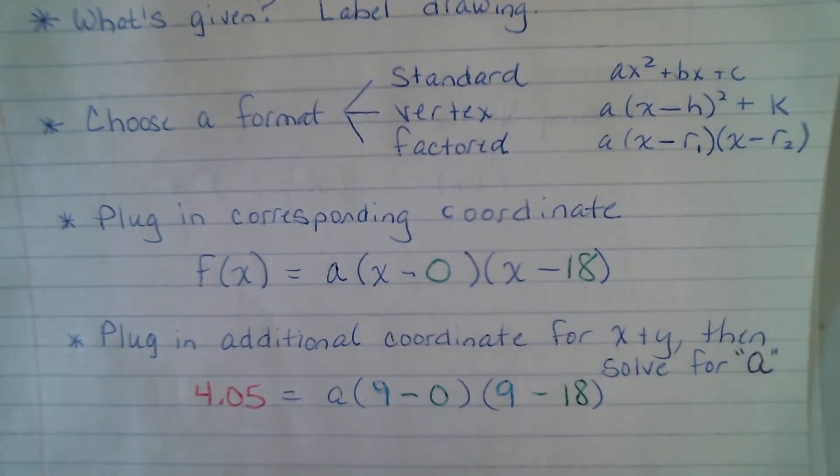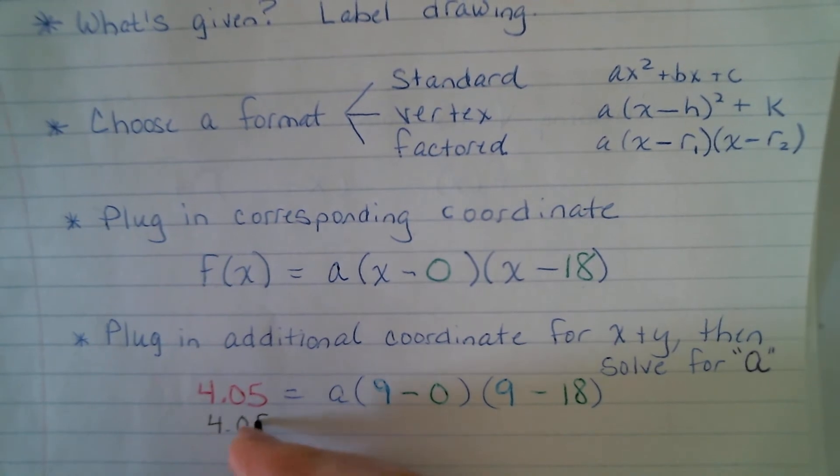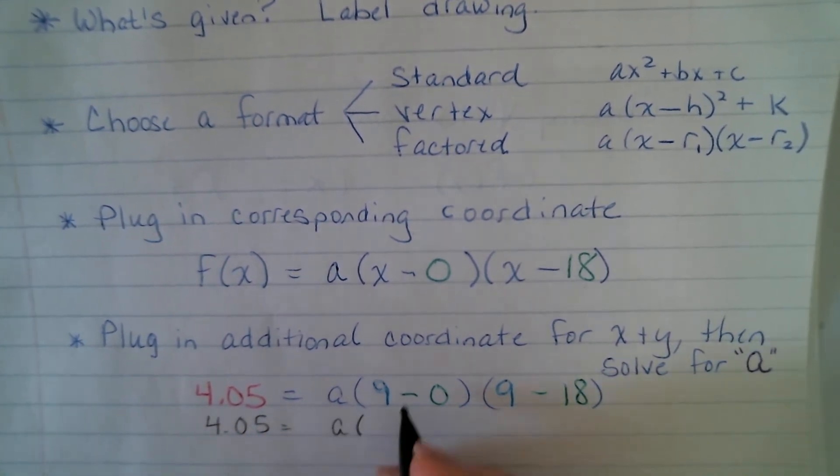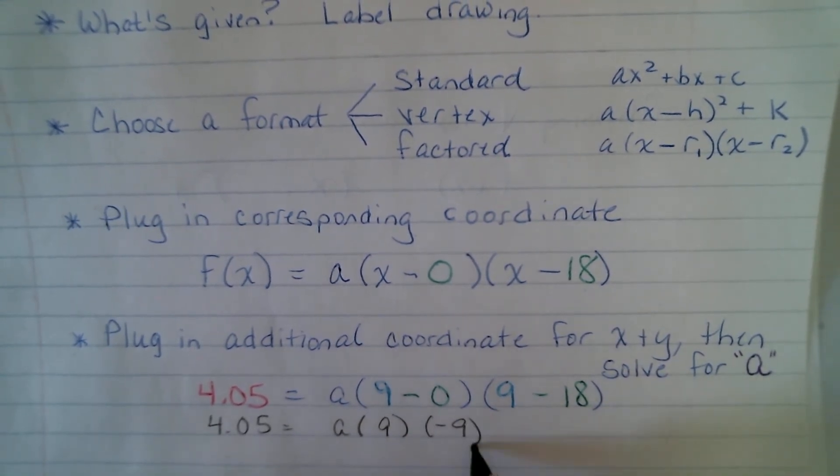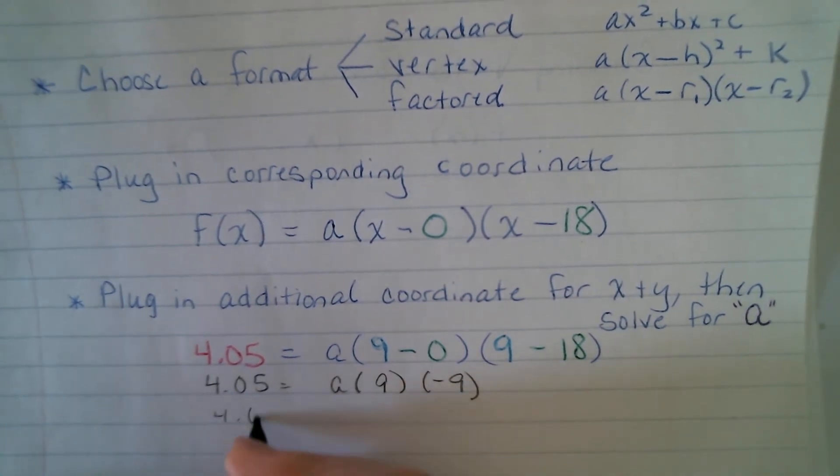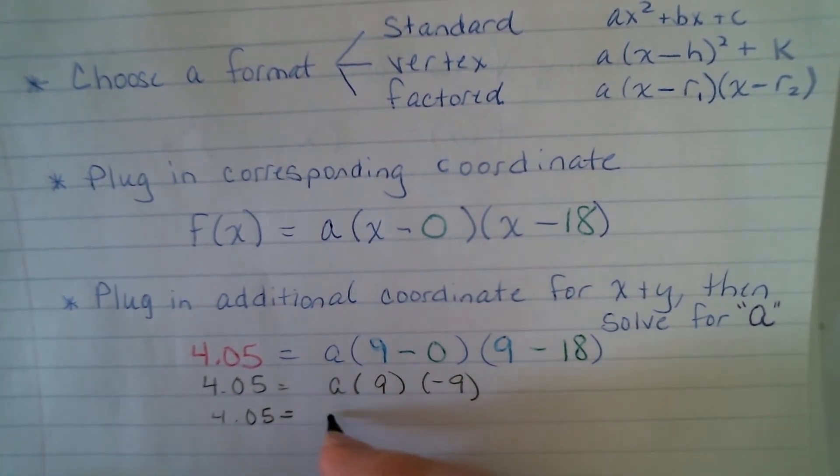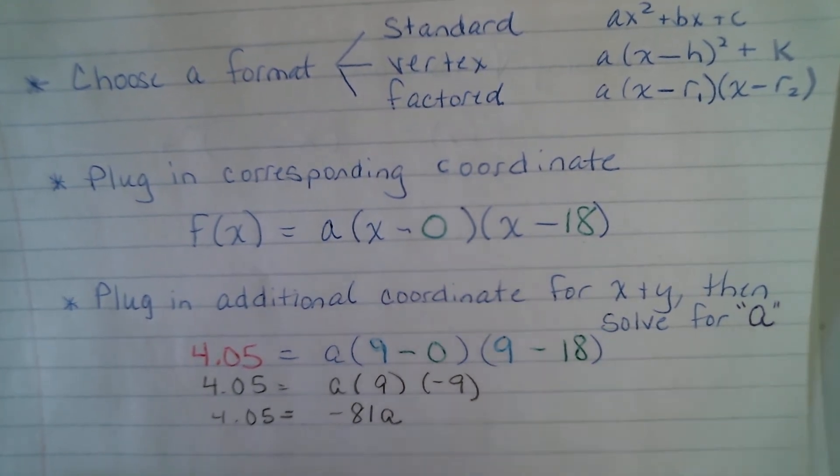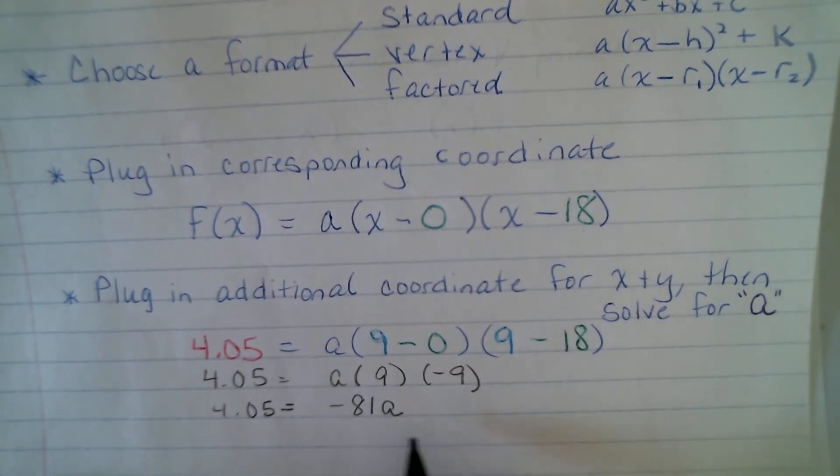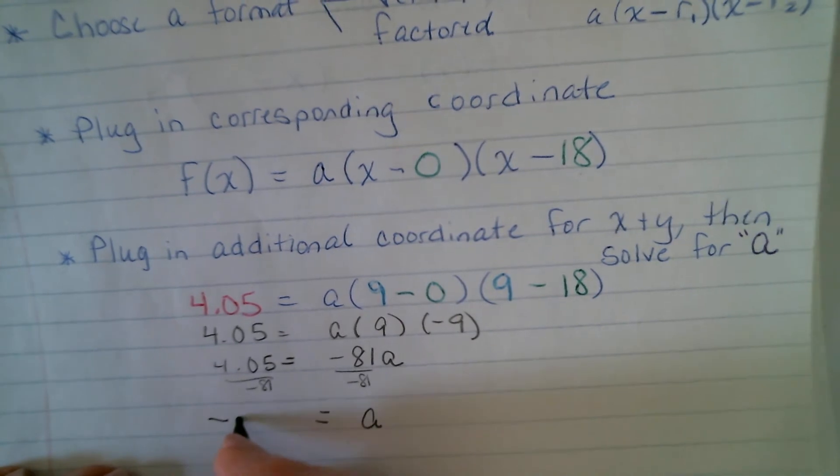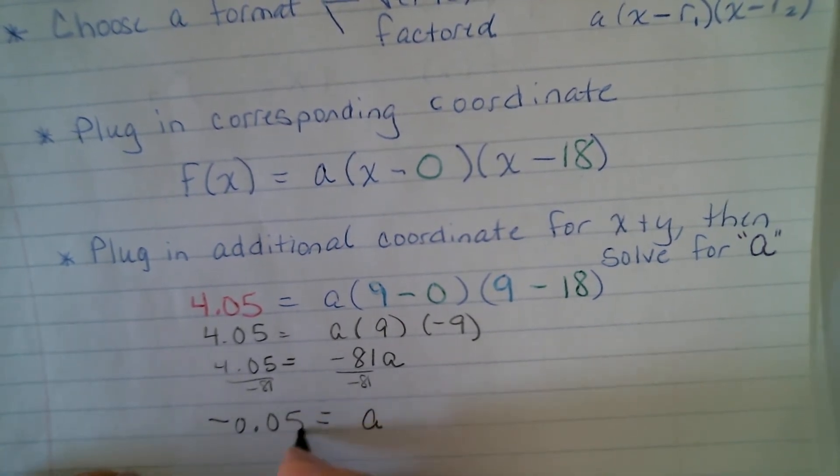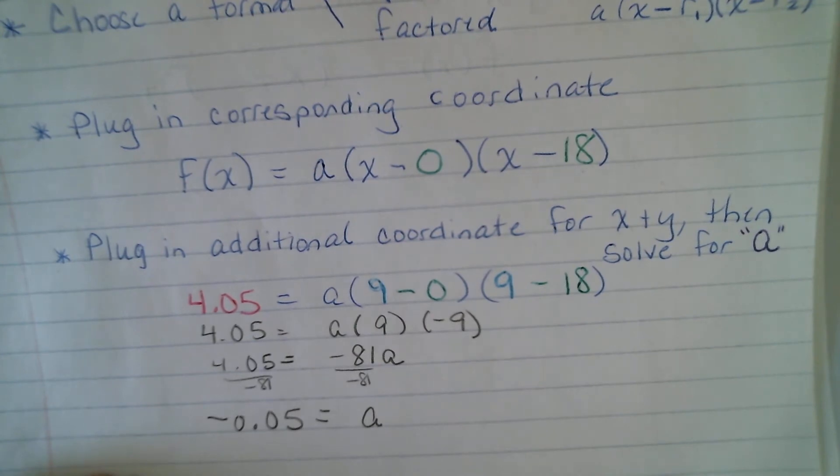So, we're going to plug it in, solve for a. 4.05 equals a times, well, that's going to be 9. And that's going to be negative 9, okay? 4.05 equals a times, and we'll multiply those. Let's put our coefficient in the front like we typically would be. Okay, and then we're going to divide both sides by negative 81, so that a is alone, and it is negative, go figure, 0.05. We knew it was going to be a fraction because it's so wide, right?